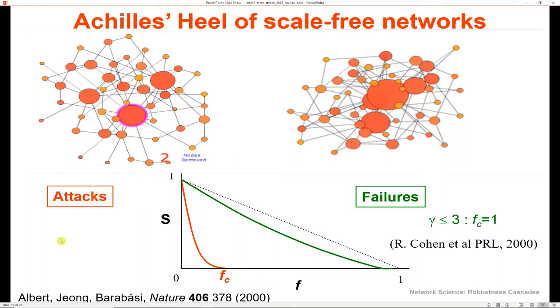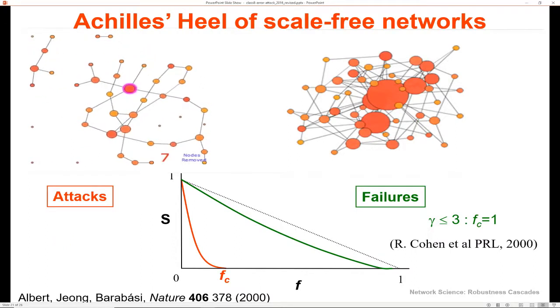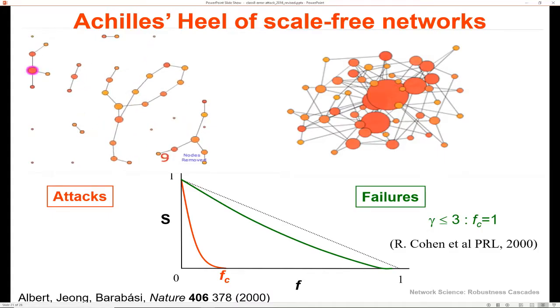So here, we start to remove the biggest nodes in the network. And you can see that the behavior is much different. We actually start to lose that giant component right away. So the Achilles heel of scale-free networks is coordinated attacks.